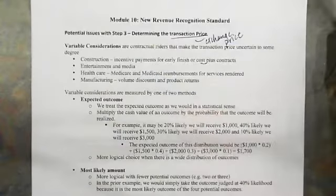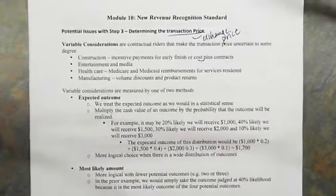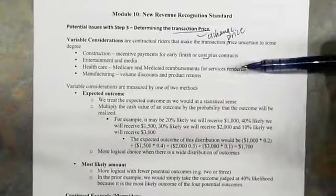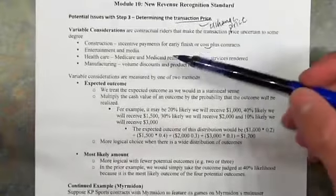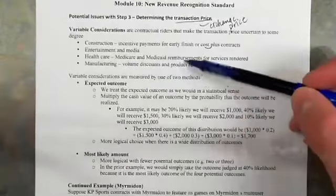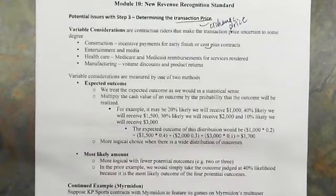Entertainment and media has some of its own, perhaps with certain thresholds of sales being met. Then the owners of the media that have the license get additional kickbacks. Healthcare has Medicare and Medicaid reimbursements for services rendered. And manufacturing gets a lot of volume discounts and product returns that could affect the actual price received for items being sold.